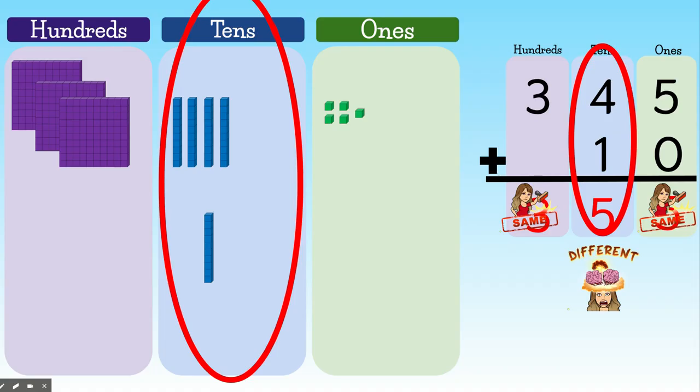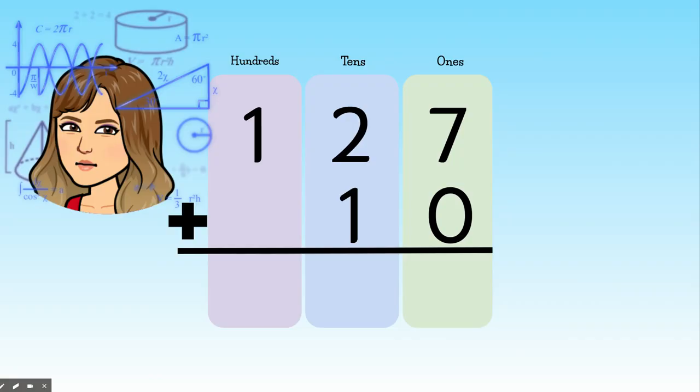Why? Well, it changed because these other numbers are added to zeros, right? But when you add 1 ten, it's going to change the number in the tens place. The number in the tens place is the number that changes when you add tens.